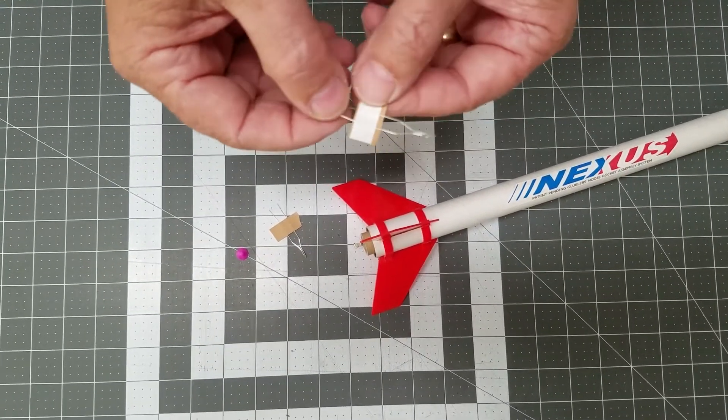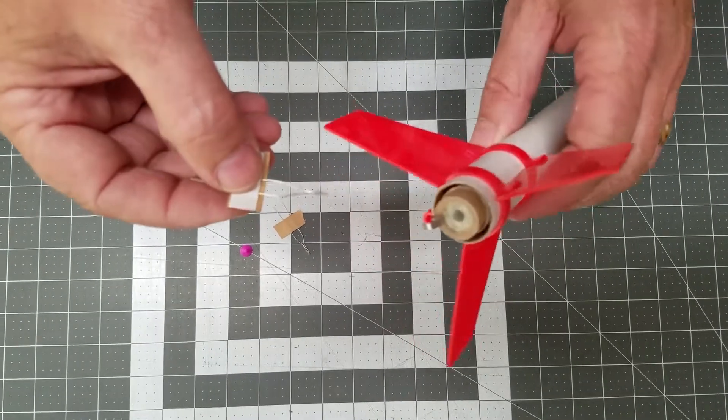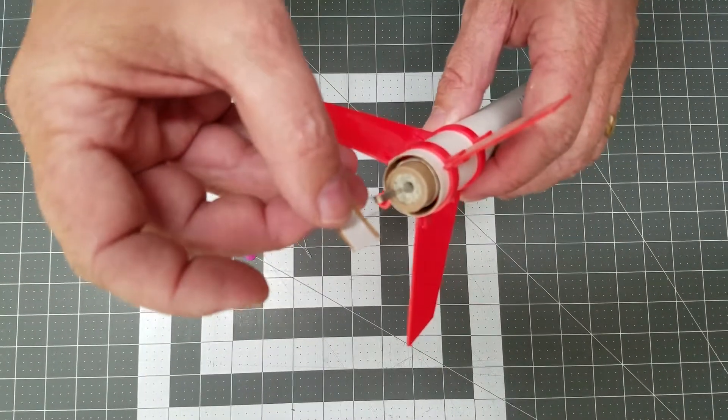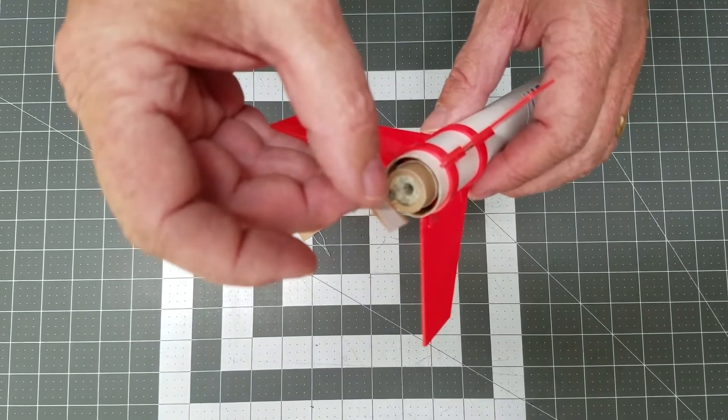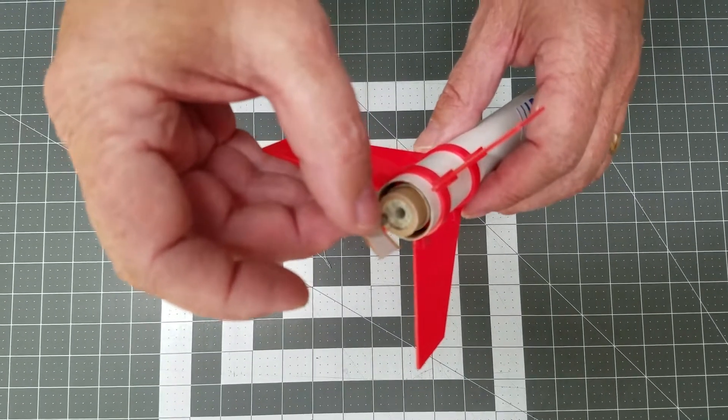We're going to take the igniter and insert it in the motor gently so it's touching the powder grain at the end of the nozzle. But do not jam it in.